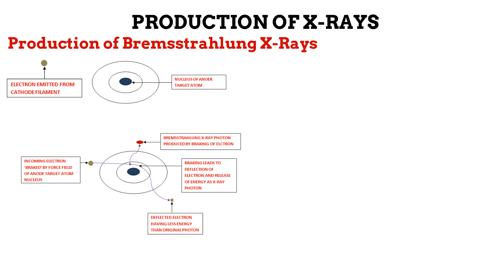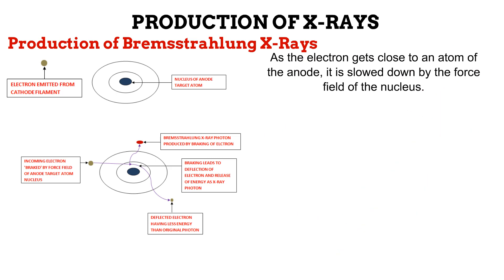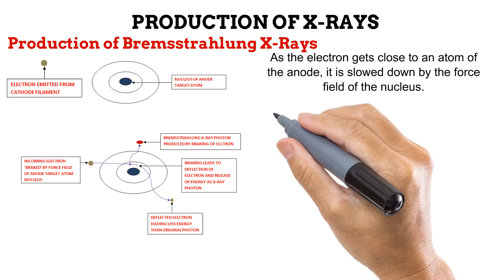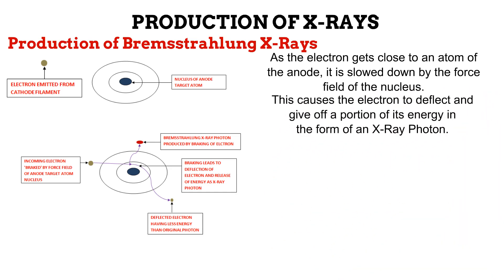It is an elaborate process and may seem overwhelming, but is actually very easy once you understand it. The electron is attracted towards the nucleus of the target atom. The nucleus has a certain force field surrounding it, and as the electron gets close to the nucleus, this force field suddenly slows down the electron, like how a brake slows down a moving car. This braking of the electron causes it to deflect or change direction. As it does this, a portion of its energy is given off as an X-ray photon. The energy of the X-ray photon produced is equal to the energy of the incoming electron minus the energy of the electron that is deflected and eventually leaves the anode atom.